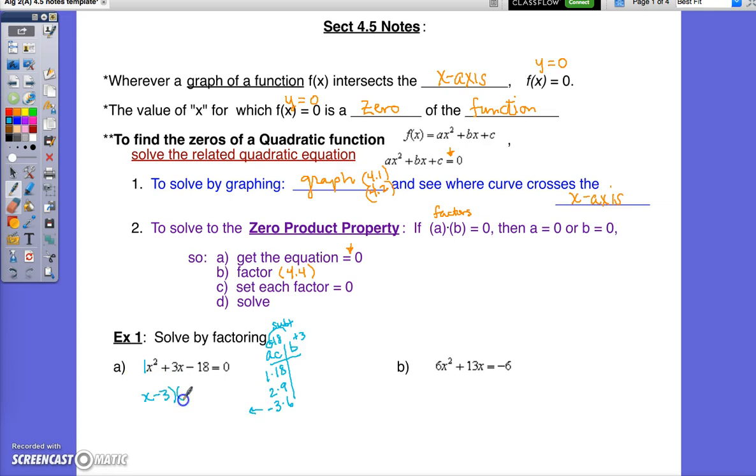Now, I will set this equal to 0. And what this property says is I have to set each of these equal to 0 and solve. So add 3 to the other side, x equals 3. Now, set this factor equal to 0 and solve. Subtract 6 to the other side, x equals negative 6. And here are your solutions to your solve by factoring.